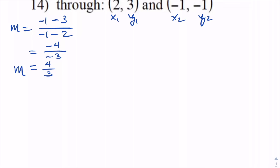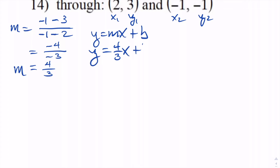Now, the equation of a line is y equals mx plus b. We can rewrite that knowing the slope: y equals 4 thirds x plus b. We're going to solve for b using one of the points — the 2 and the 3 — because x is 2 when y is 3. Replacing x and y: 3 equals 4 thirds times 2 plus b. Multiplying fractions: 4 times 2 over 3 times 1 gives us 8 thirds plus b.